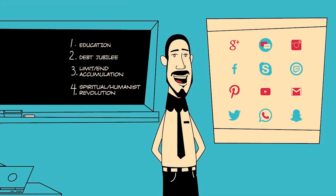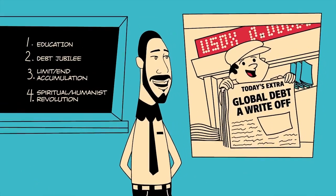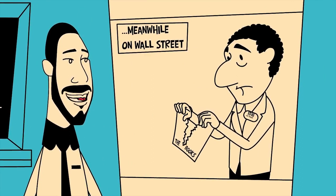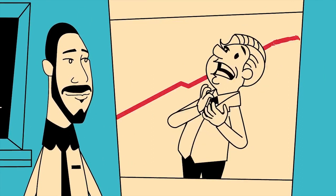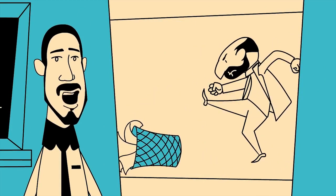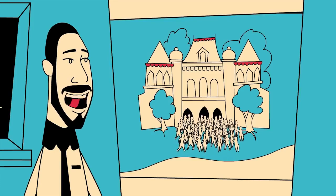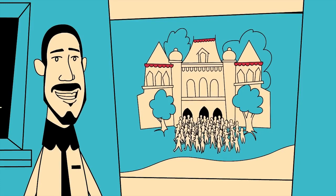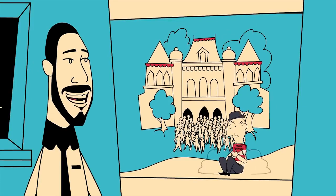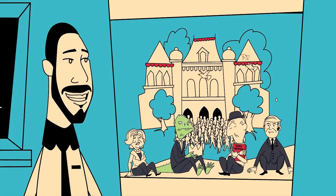The second thing we can consider is a global debt jubilee — when debt is simply written off the books. I know it sounds outrageous, but more and more people are discussing the possibility. And besides, there's no way our 300 trillion global debt can ever be paid off. Third, since accumulation is the root of the problem, we need to end accumulation, or manage it in some sensible way. How that's done is something that people can decide, but we have to do something.